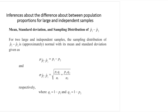We will first talk about the sampling distribution of the difference between two sample proportions. When the samples are large and independent, then the sampling distribution of p1-hat minus p2-hat is approximately normally distributed, and the mean and standard deviation are given as follows. If you still remember, the mean of the sample proportion for one population is equal to p, and the mean for p1-hat minus p2-hat is simply an extension of that formula.